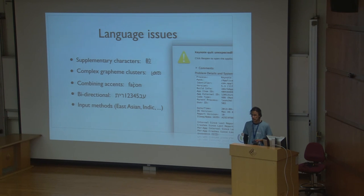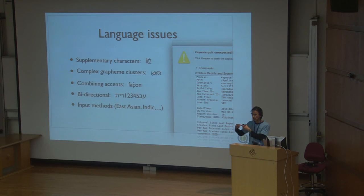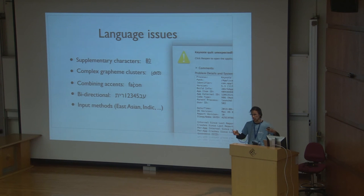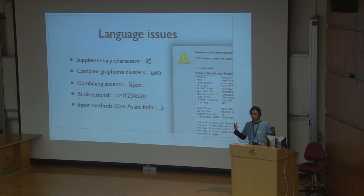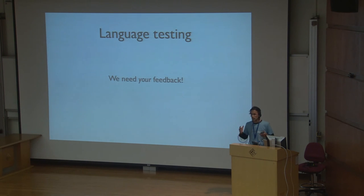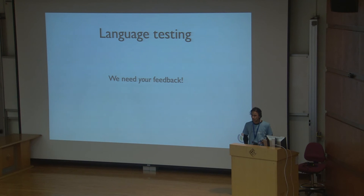And then you have input methods, which are sort of predictive text for typing in Asian languages. They create a whole bunch of problems because not only do you have to worry about the operating system and the browser, you also have to worry about the input method software. That just takes the number of different varieties you have to test for and multiplies it by about ten. All these different issues create constraints and we have to code the system to fit with all these different constraints at the same time. But fundamentally we need your feedback — please test in your scripts, in your language, and please tell us what doesn't work.